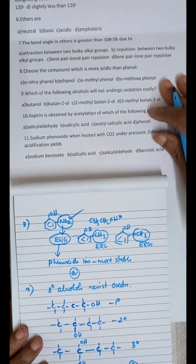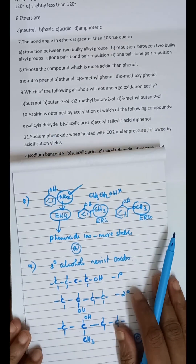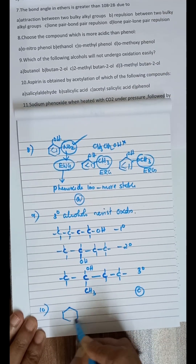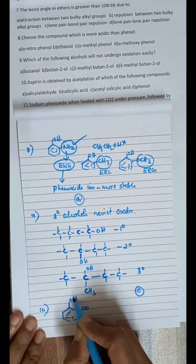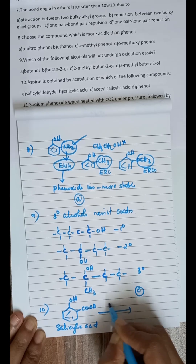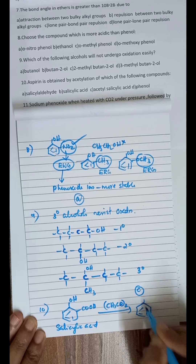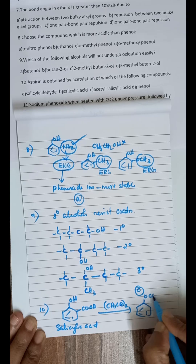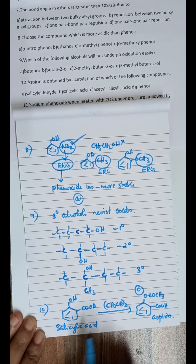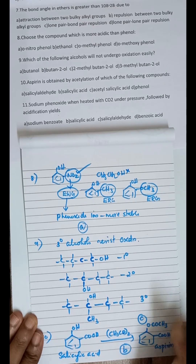Question 10: aspirin is obtained by acetylation of which compound? Aspirin is obtained from salicylic acid, which has an OH group and a COOH group in the 1,2 position. On acetylation, a COCH3 group is introduced in place of the H on the OH group, giving aspirin. So the starting compound is salicylic acid, and option B is the correct answer.